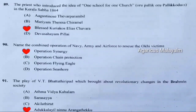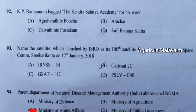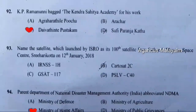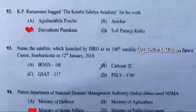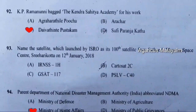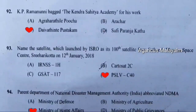Ninety-second question: K.P. Ramayanunni won the Sahitya Academy award for his work. Correct answer is option C — Devathinte Pusthakam. Ninety-third question: Name the satellite launched by ISRO as its hundredth satellite from Satish Dhawan Space Centre, Sriharikota, on 12th January 2018. Correct answer is option D — PSLV-C40.